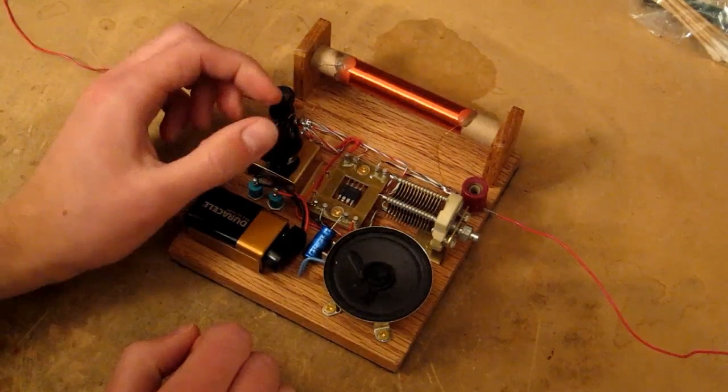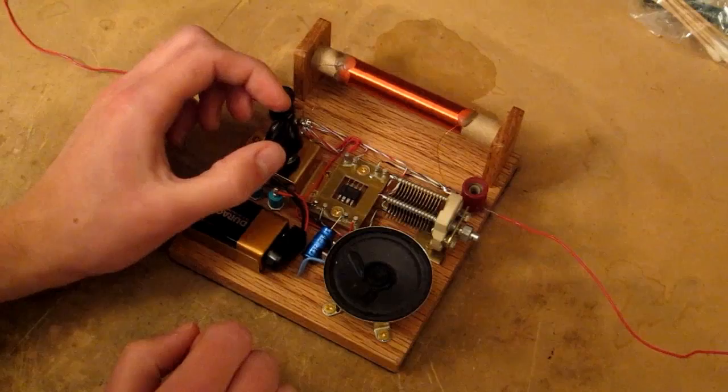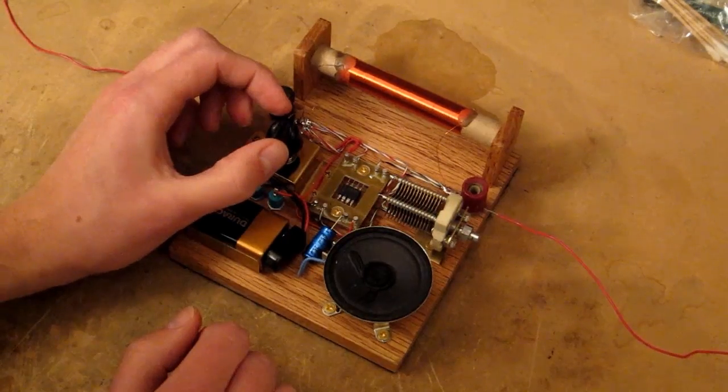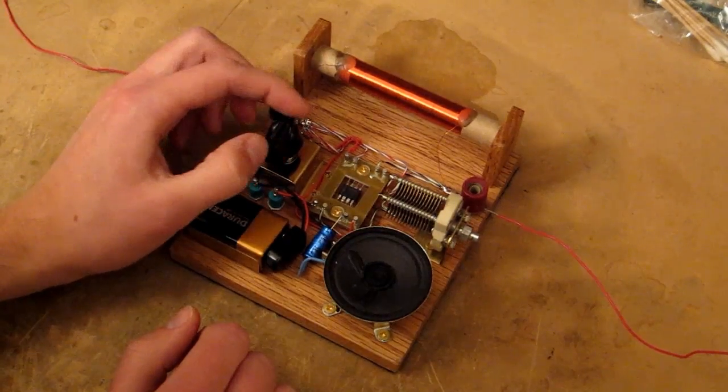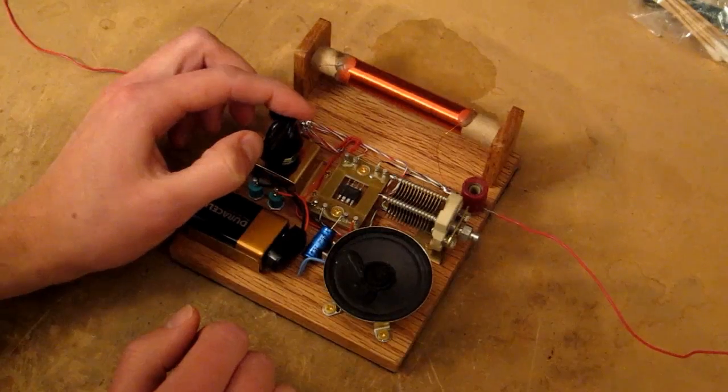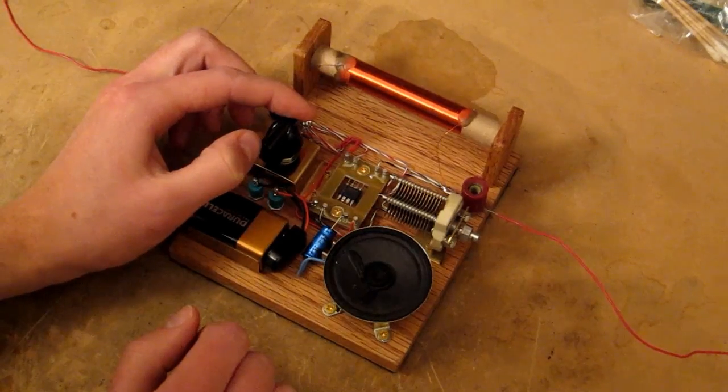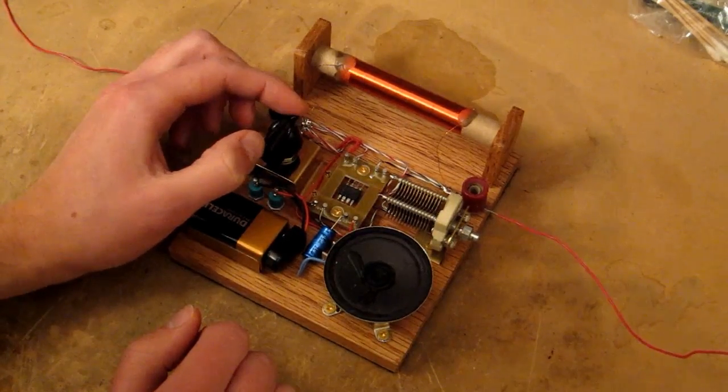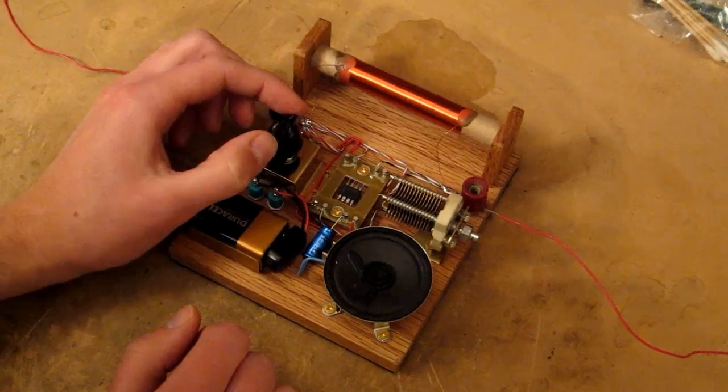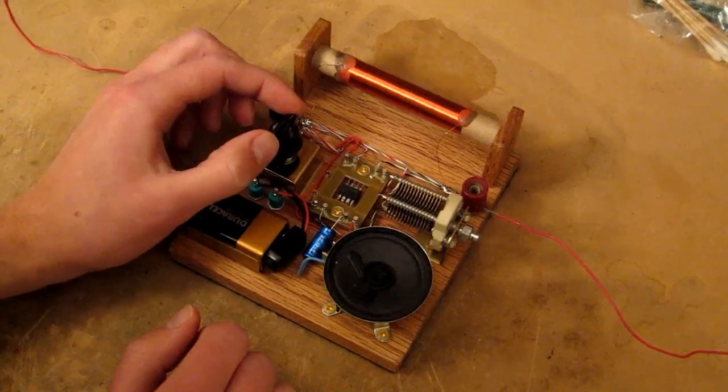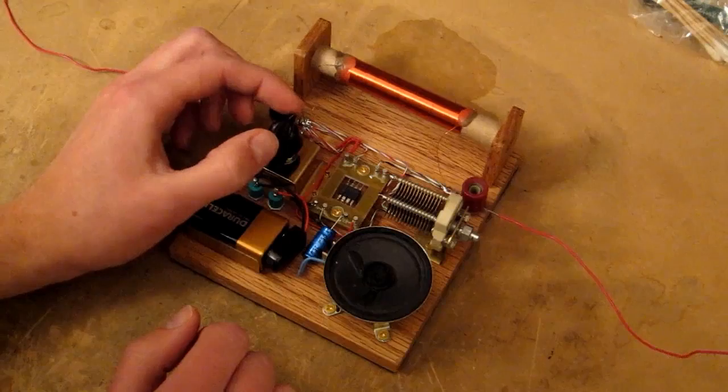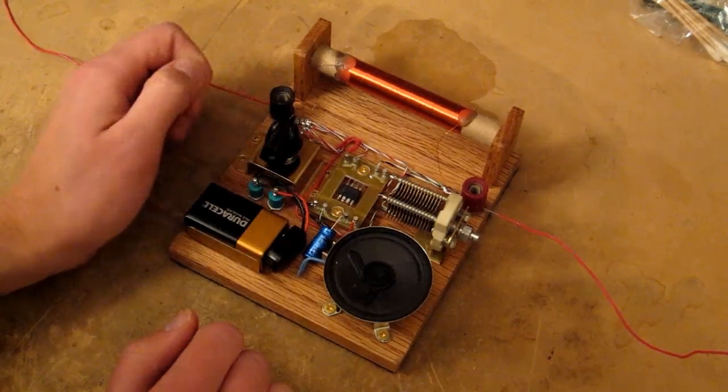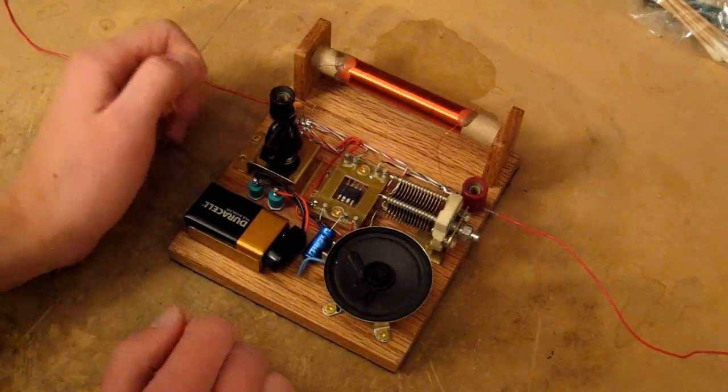And there you have it. Let's adjust the bias knob and try and make the signal a little louder. Okay now it's distorting a little bit, let's back it off just a hair. Okay, there we go. AM radio.